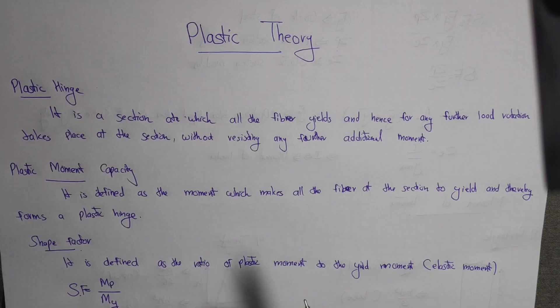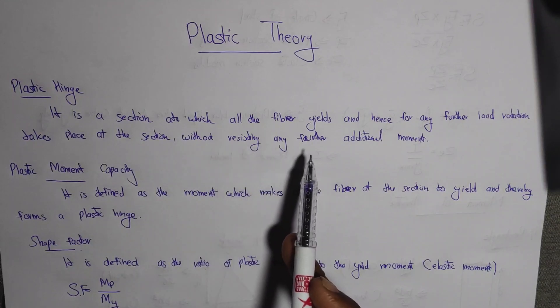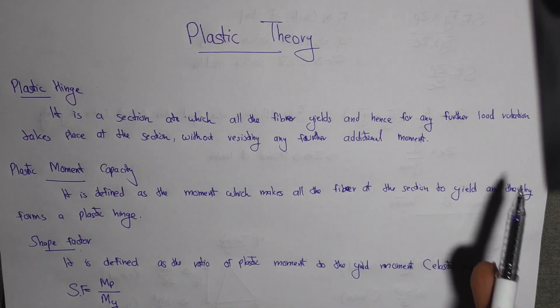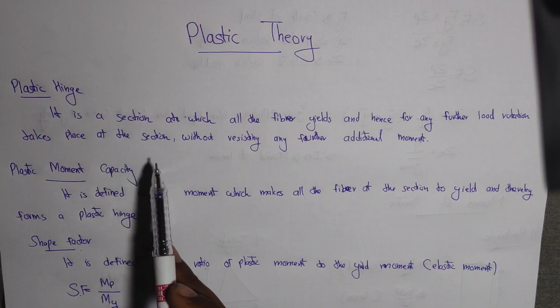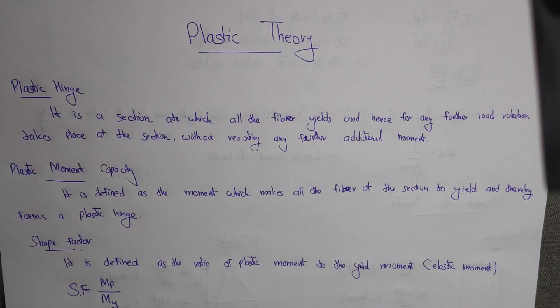The first heading is Plastic Hinge. It is defined as a section at which all the fibers yield, and hence for any further load, rotation takes place at that section without resisting any further additional moment.